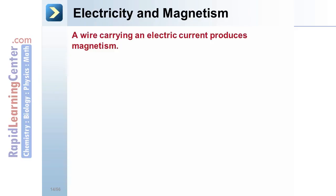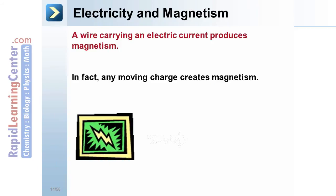Electricity and magnetism. A wire carrying an electric current produces magnetism. In fact, any moving charge creates magnetism.